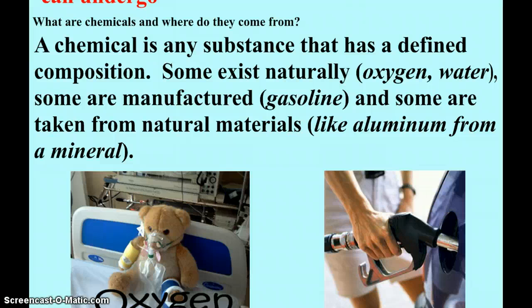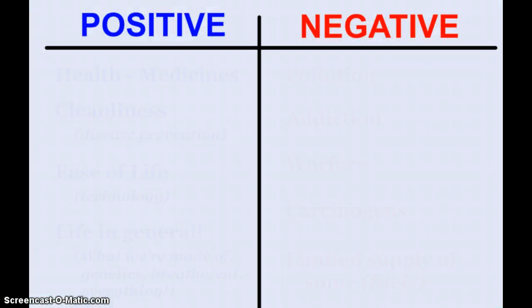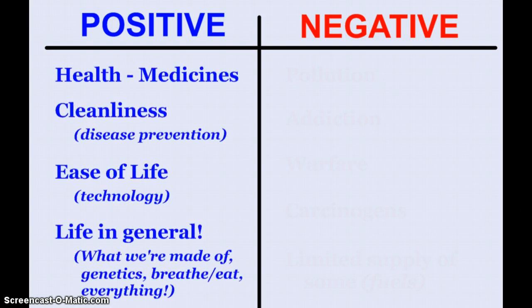Now what are some positive and negative aspects of chemicals and chemistry? Well positively, we see some of these things. Health and medicines and the fantastic wonderful world of medicine that keeps us living longer and longer all the time. And part of that is cleanliness and disease prevention and doing disinfections and all the hand sanitizers and stopping plagues from spreading, for example. The ease of your life. So much has been made possible courtesy of technology. And a lot of technology is linked to chemistry, like silicon wafers and making the ability to have technology be so small.